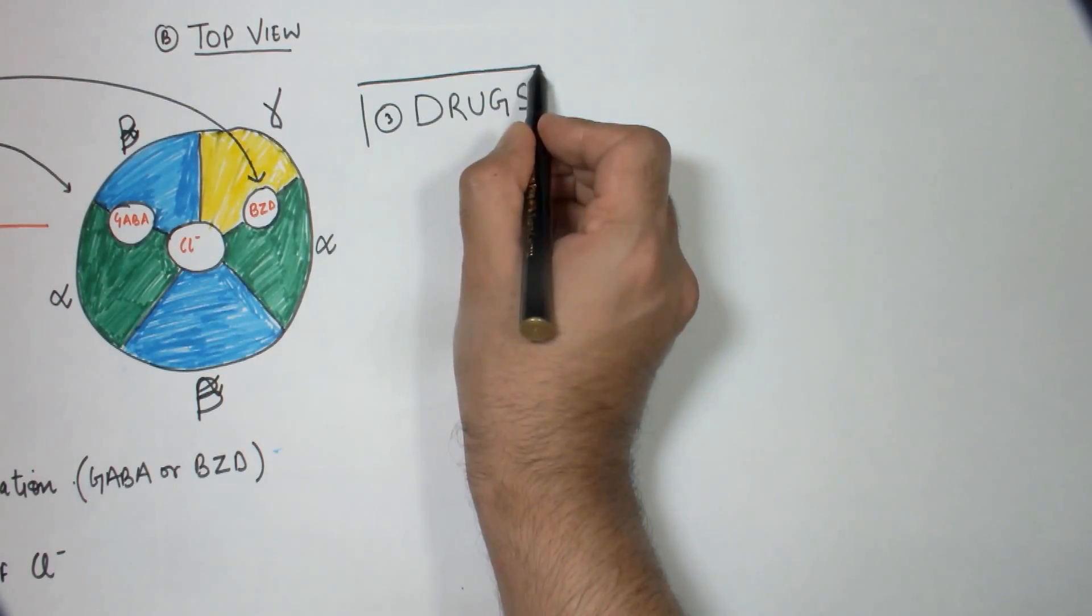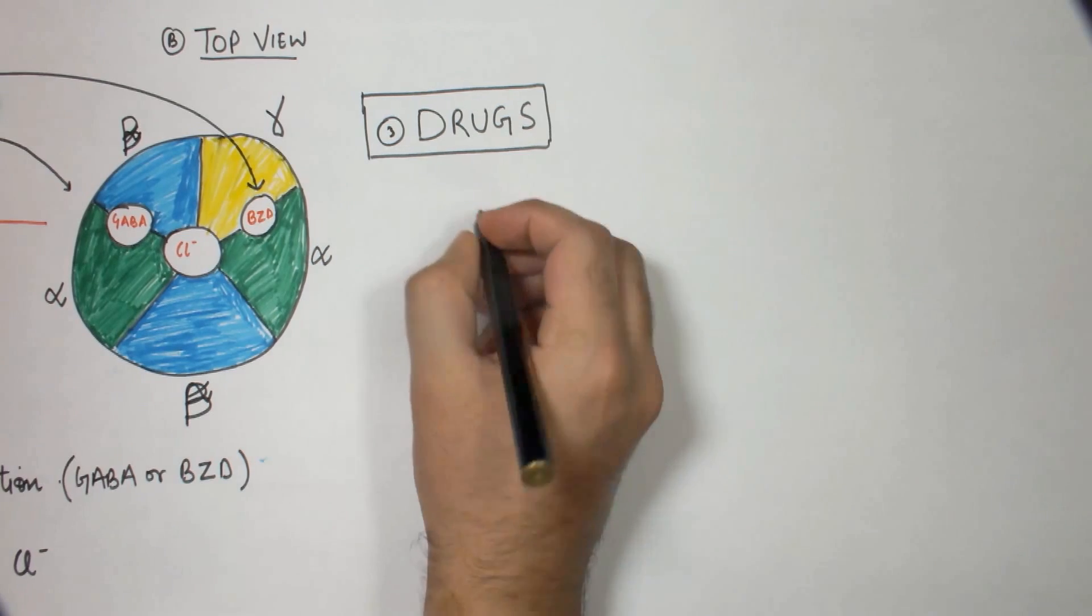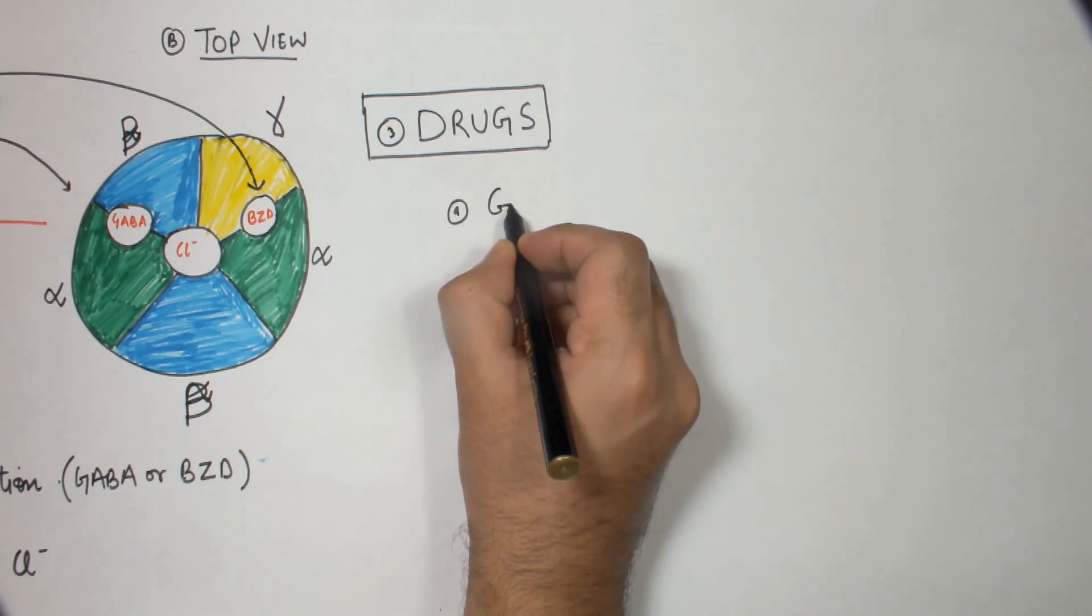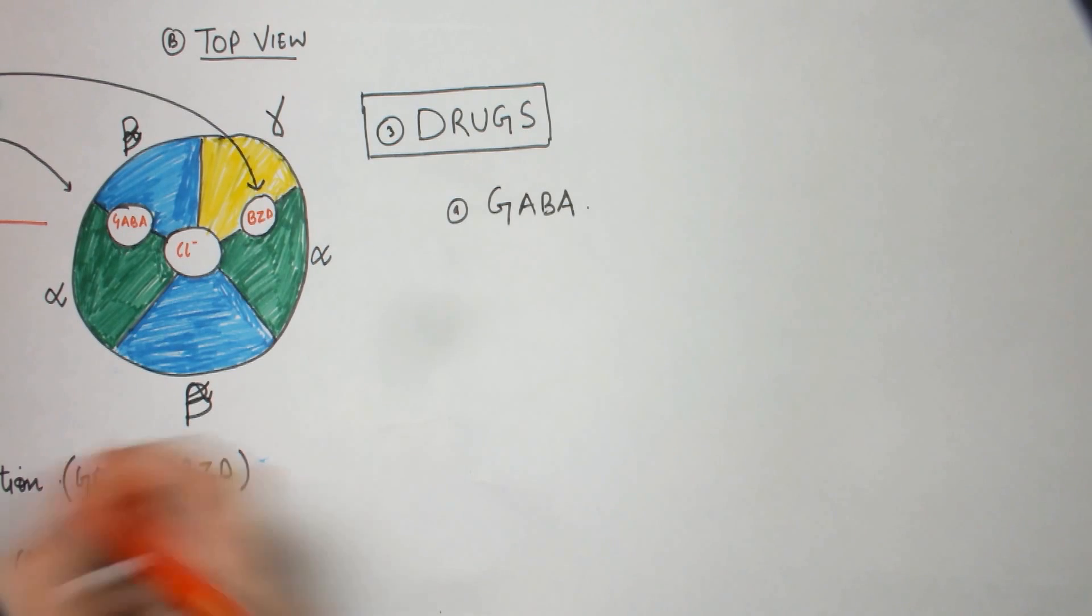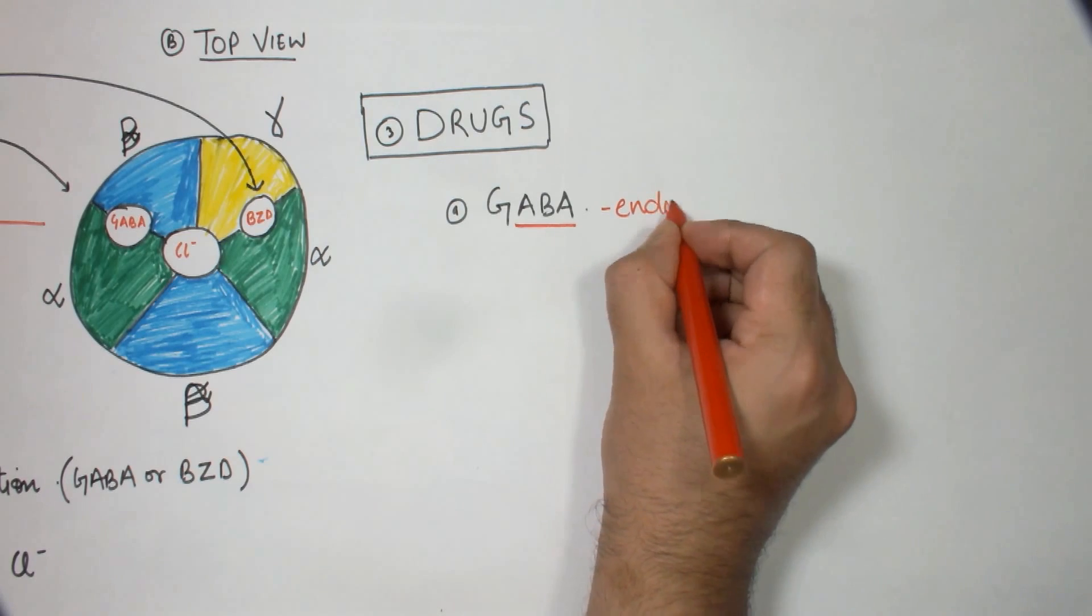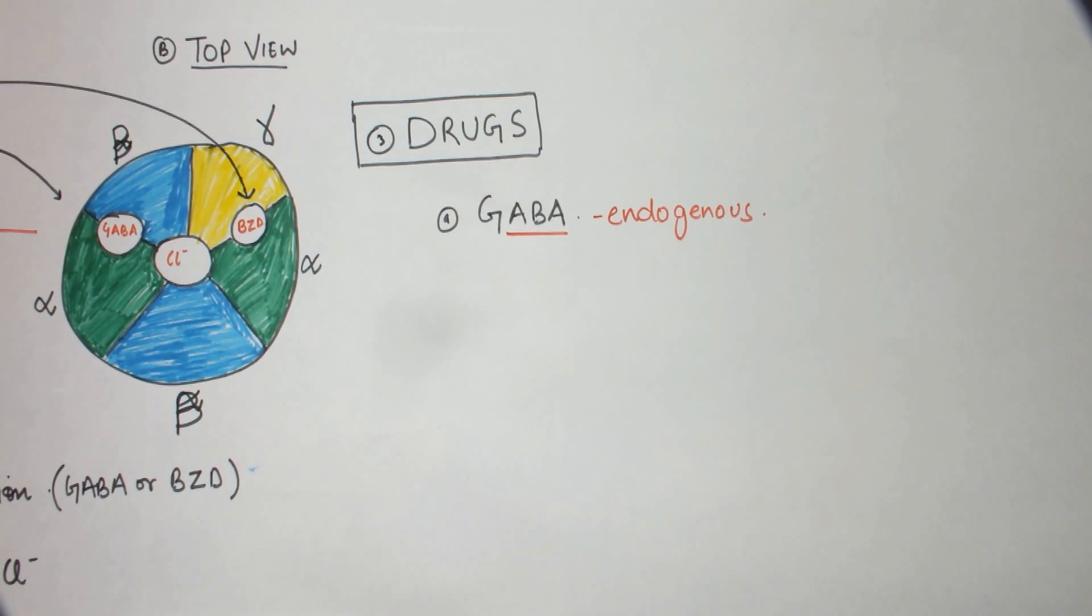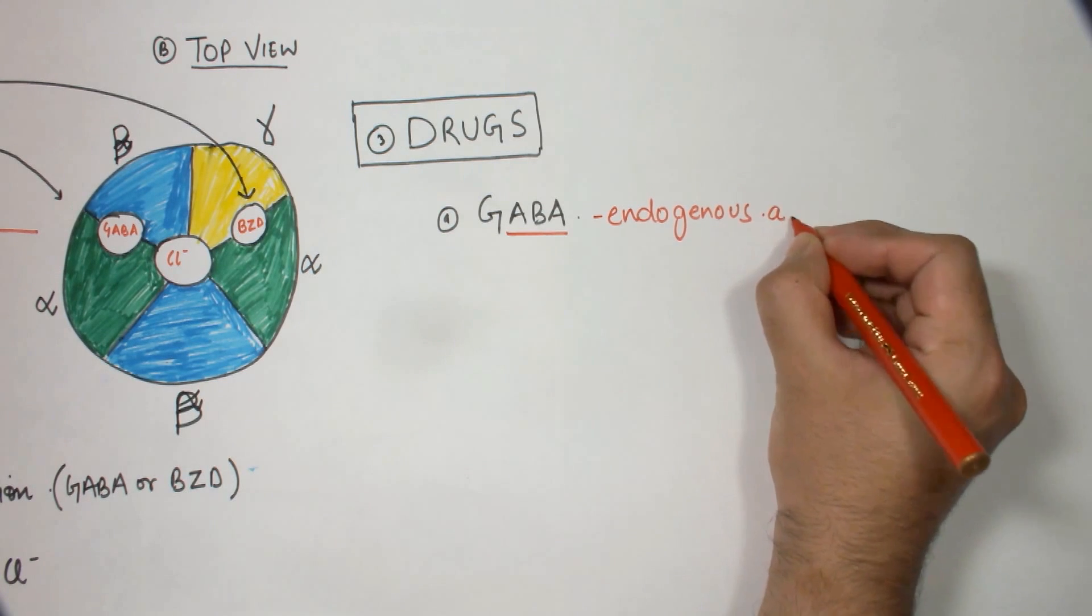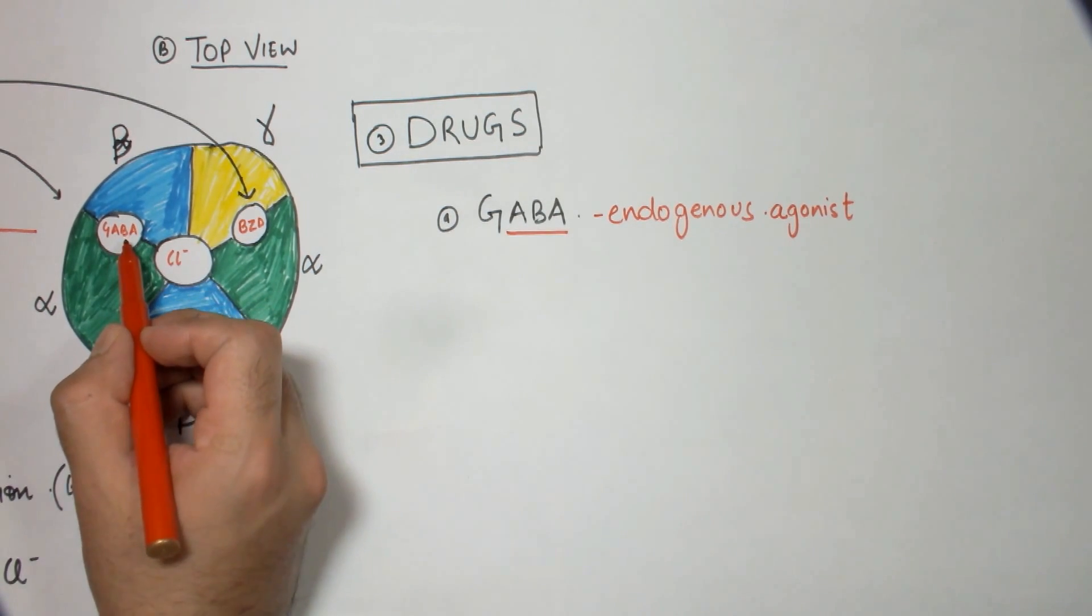Now let's look at some of the drugs which act on the GABA receptor. First of all, I would like to discuss the gamma-aminobutyric acid or GABA. This drug, or it's basically an endogenous agonist of the GABA receptor, is released at various sites in the CNS and it acts on the GABA site and causes the same sequence of events we have just discussed.